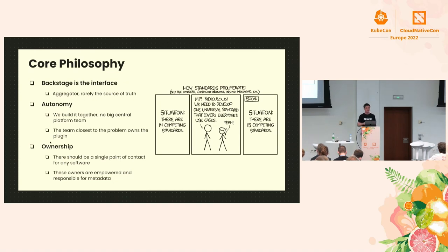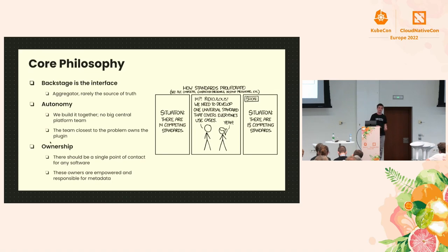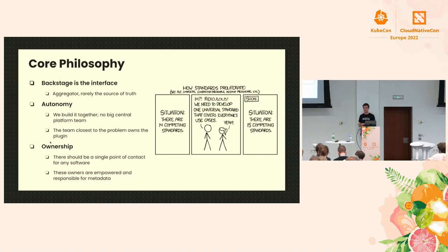A few core philosophies make Backstage successful. First, the interface: Backstage is an aggregator — there are many tools, and this one interface unifies them, but Backstage isn't there to replace them. For example, with CI/CD, as a developer you want a quick one-glance view of whether builds are succeeding, but if there's a problem and you really need to dig in, we don't want Backstage to be a duplicate of all the details. We give you a way to click through from the plugin to that build in your CI/CD system to debug it there.